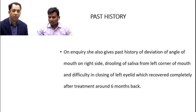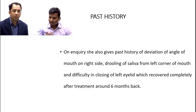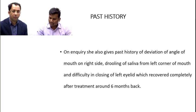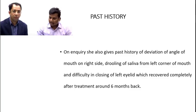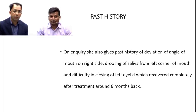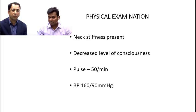On enquiry, she also gives a past history of deviation of the angle of mouth to the right side, drooling of saliva from the left corner of the mouth, and difficulty in closing the left eyelid — all of which recovered completely after treatment around 6 months back. This history is suggestive of lower motor neuron type paralysis of the 7th nerve, though we don't yet know if it is associated with the current meningitis.